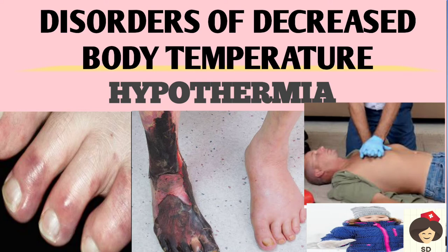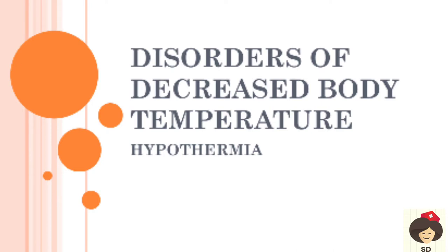Welcome to my class today. Today we will see the next topic in vital science unit - disorders of decreased body temperature, that is hypothermia. In the last class we read about hyperthermia and heat stroke. Opposite of hyperthermia is called hypothermia. Hypothermia means decreased body temperature - when the body temperature is decreased we call it hypothermia.